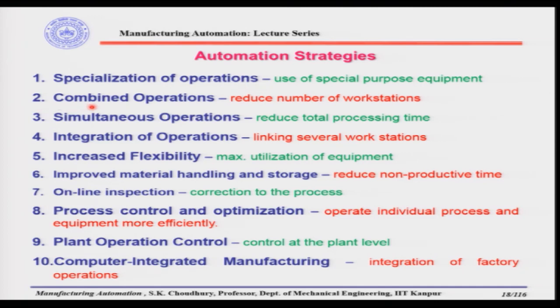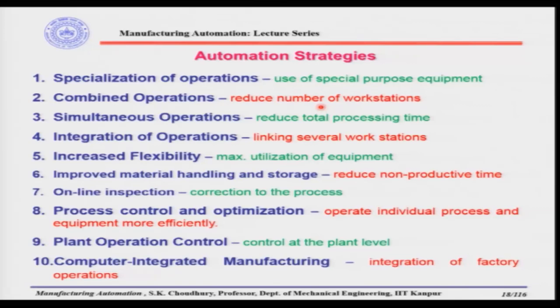The second point is combined operations. Combined operations means reducing the number of workstations. Complex parts may need a large number of processing steps or assembly operations. If we can do different processing steps in one machine, we can use a minimum number of machines, which reduces the number of workstations. This is the strategy called combined operations — few operations are combined in one workstation or one machine.